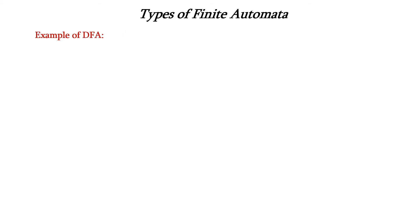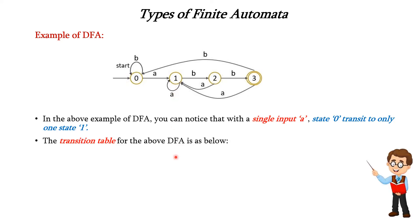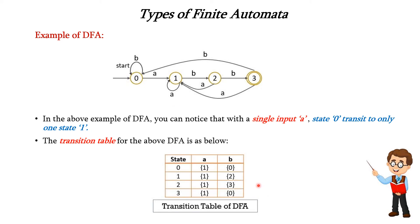Now we will see an example of deterministic finite automata. In the transition diagram, for a single input A, state 0 will transit to only one state — state 1. That is the main point in DFA. In the transition table, we have states and inputs A and B. For state 0 with input A, the next state is 1; for input B, it goes to itself (state 0). For state 1 with input A, it stays at 1; for input B, it goes to 2. Similarly, this pattern continues for states 2 and 3.